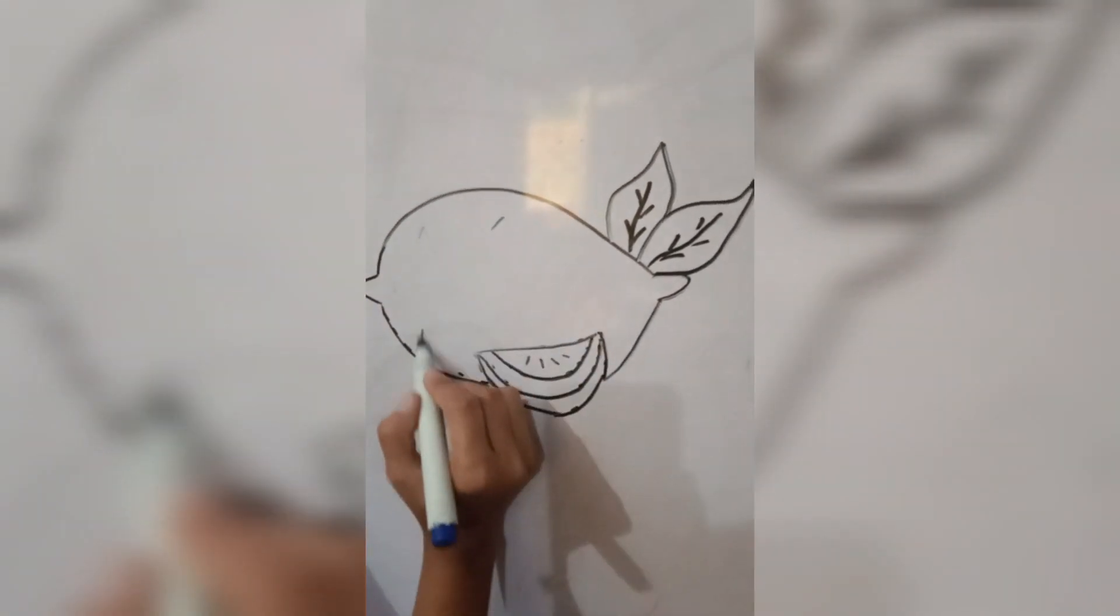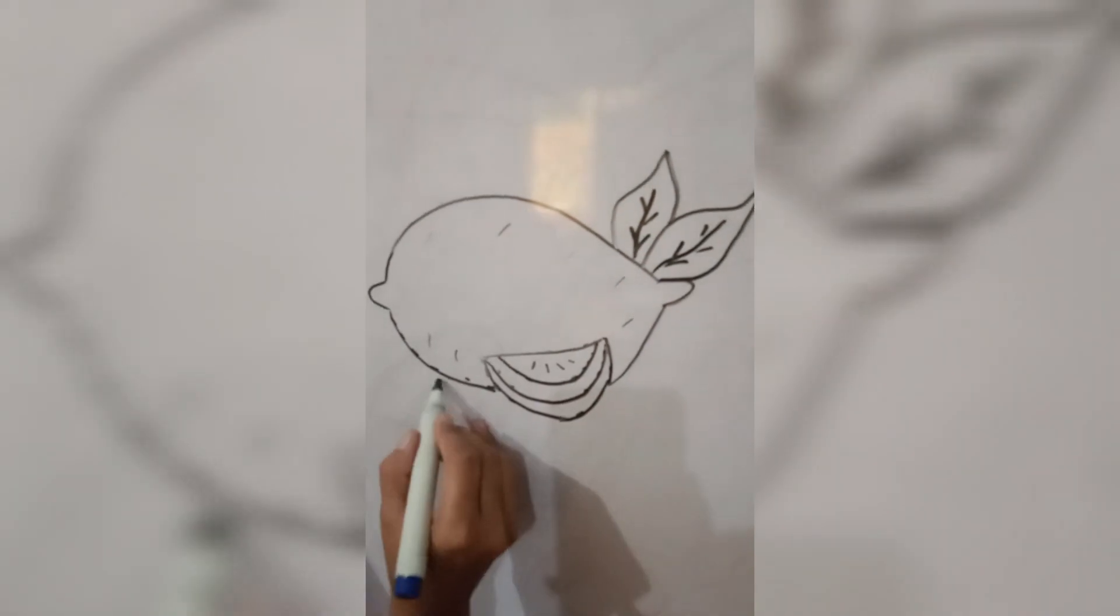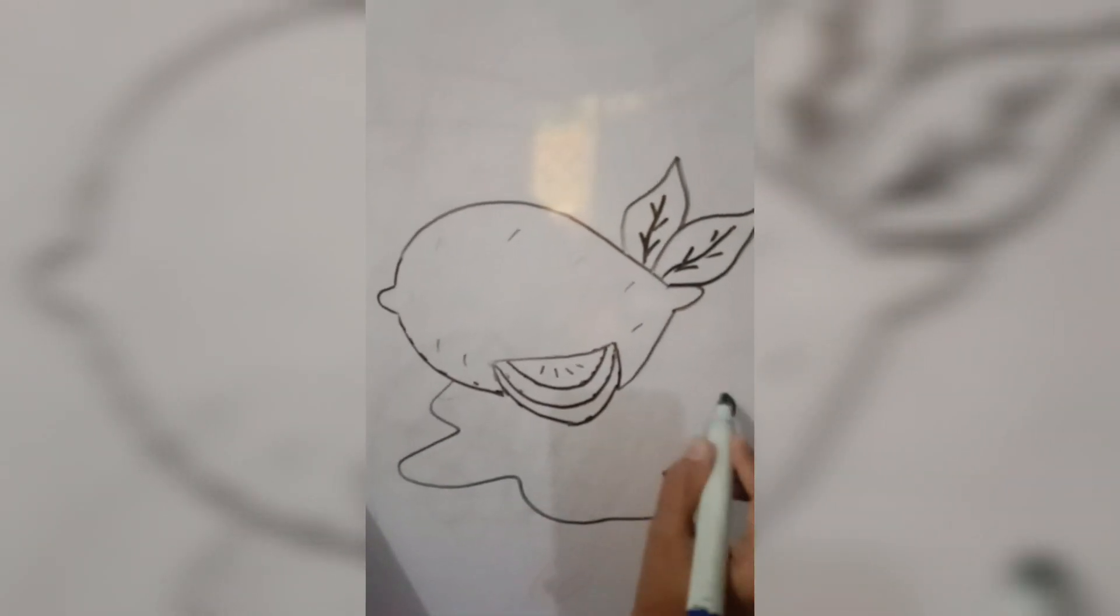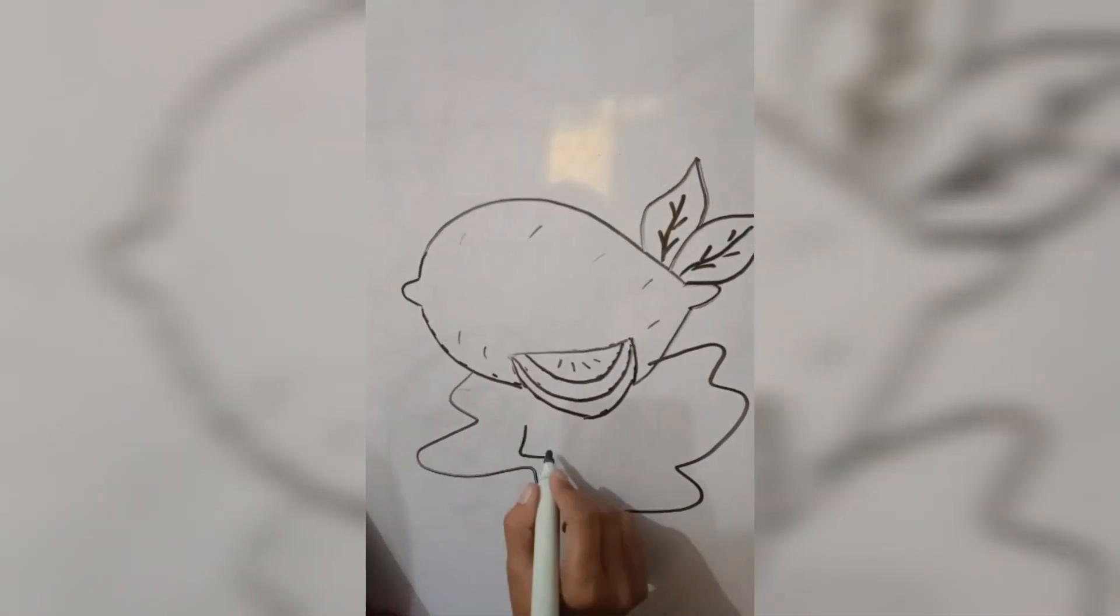The leaf should be attached to the stem at one end. Next, draw some irregular shapes on the lemon body.